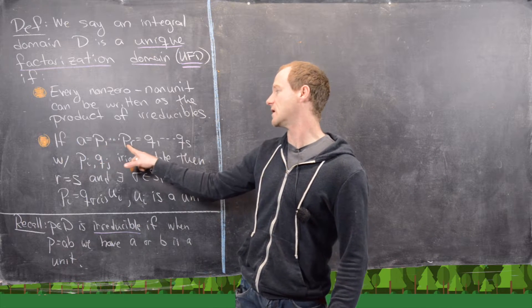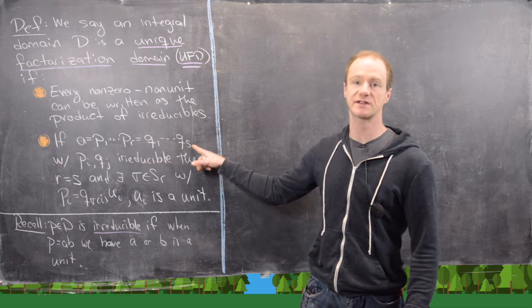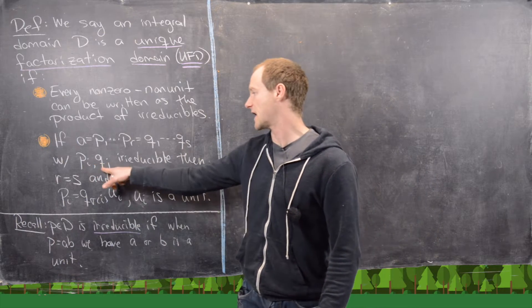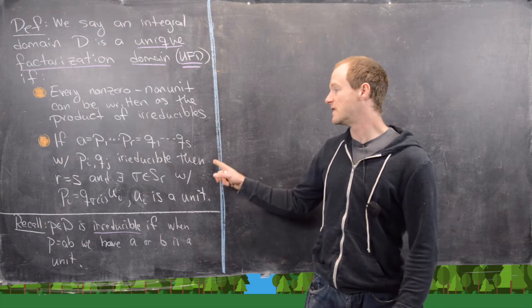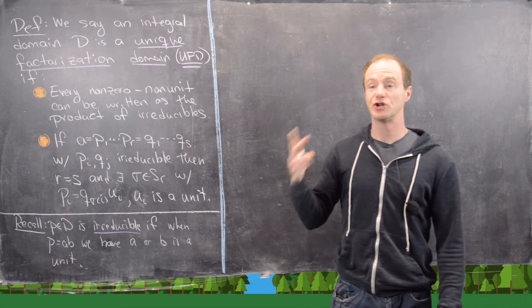So the product P1 to PR, Q1 to QS, where like I said, PI and QJ are both lists of irreducible elements, then it turns out we know two things.